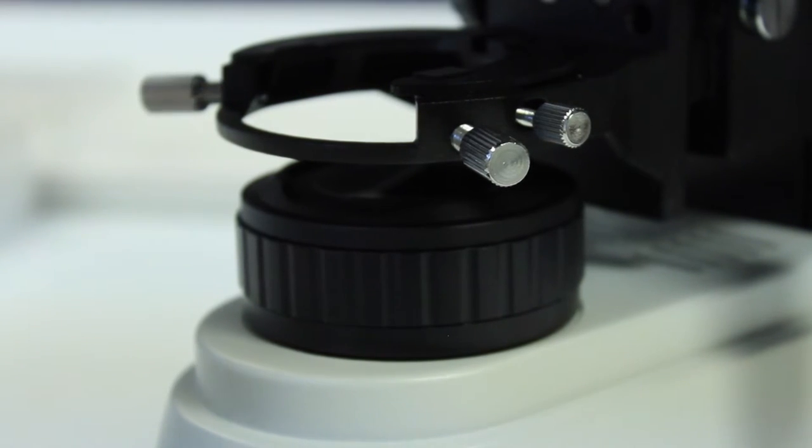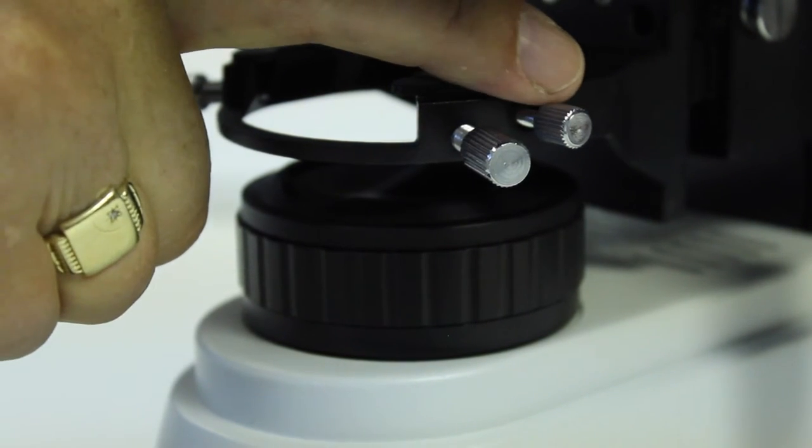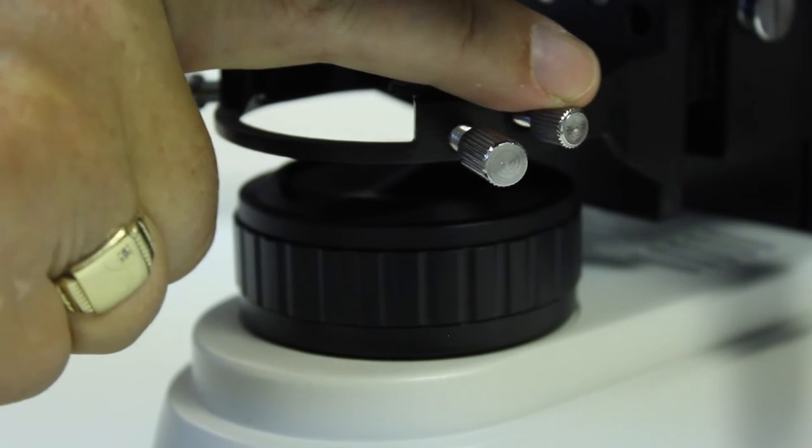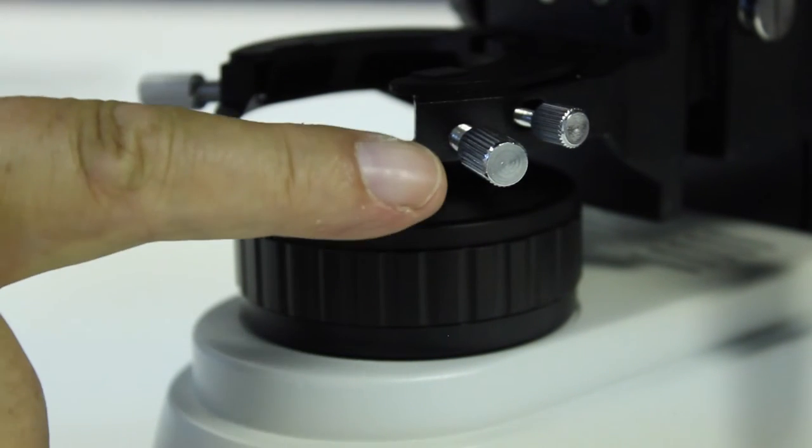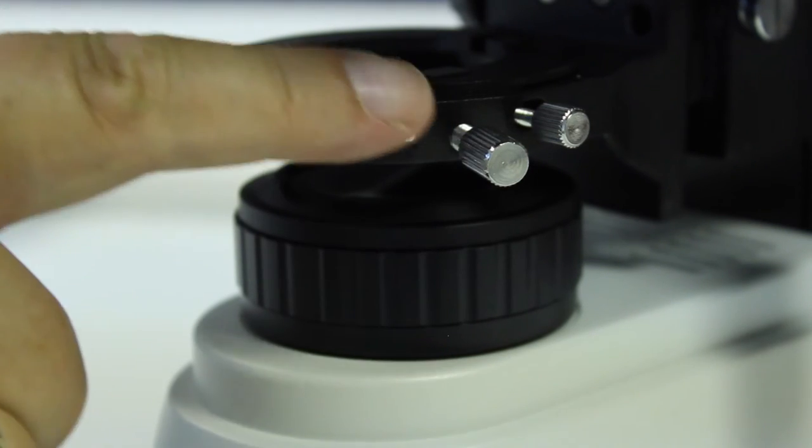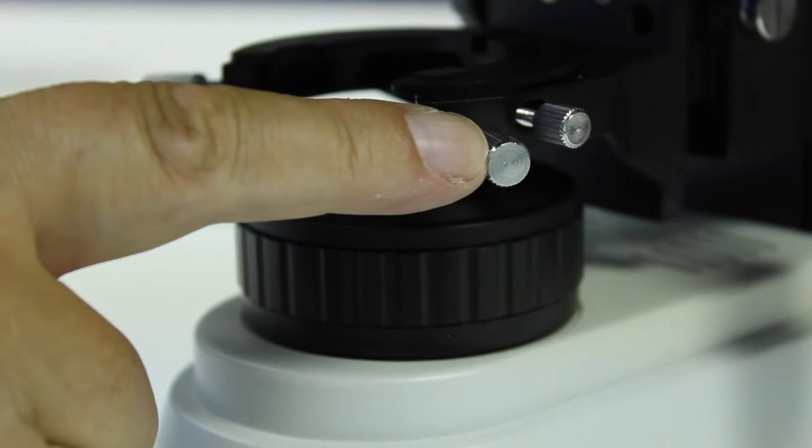On the opposite side there's a small chrome thumb nut which actually clamps the condenser into place. For the moment, ignore these two which are centering screws. We'll come on to those a little bit later.